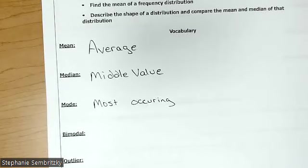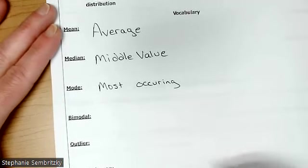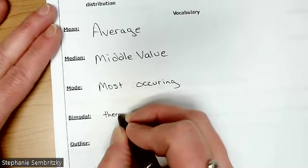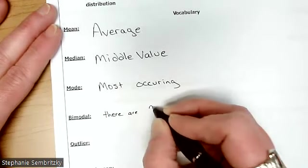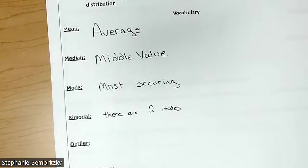Okay, all right. So mean is average, median is middle value, mode is most occurring. What does bimodal mean? There's two modes. Bimodal would mean two modes, trimodal would mean three.